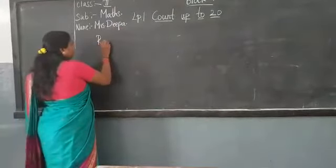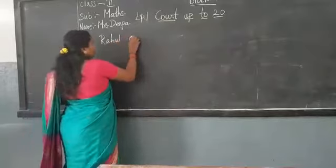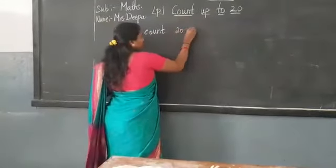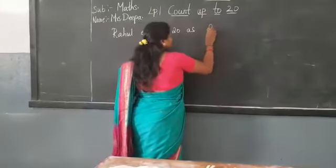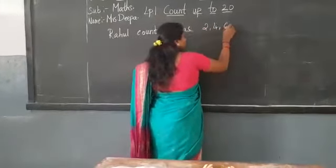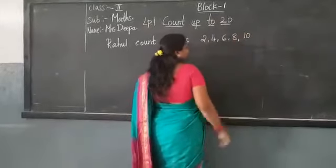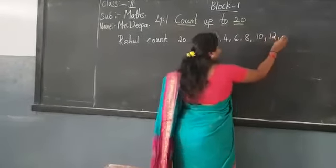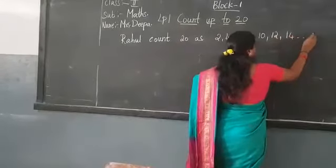Rahul counts 20 as 2, 4, 6, 8, 10, 12, 14 till 20.